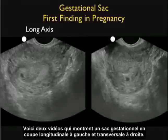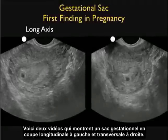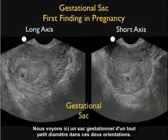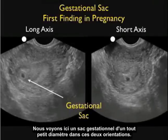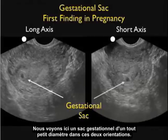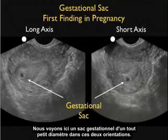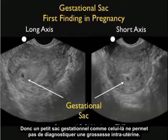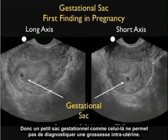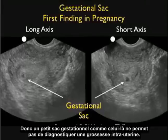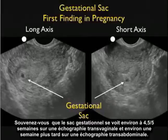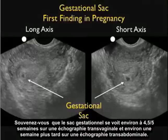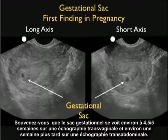Here are two video clips showing the gestational sac — long axis to the left and short axis to the right. We see a very small diameter gestational sac in both orientations. Unfortunately, this can be seen with a pseudo-gestational sac of ectopic pregnancy, so a small gestational sac like this is in no way diagnostic of an intrauterine pregnancy. Remember that the gestational sac is seen at about 4.5 to 5 weeks on transvaginal sonography and about a week later on transabdominal sonography.